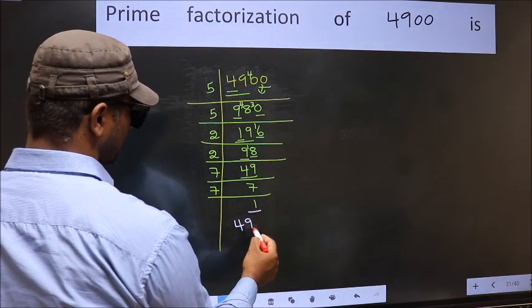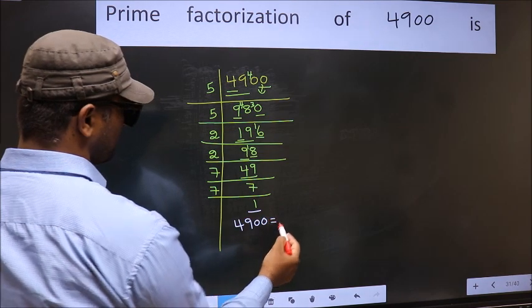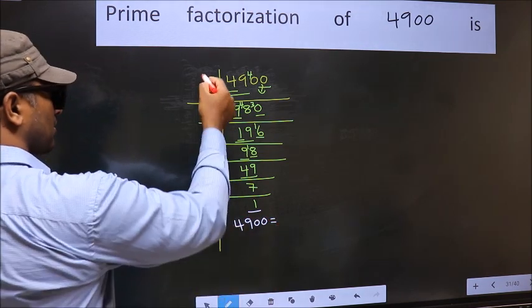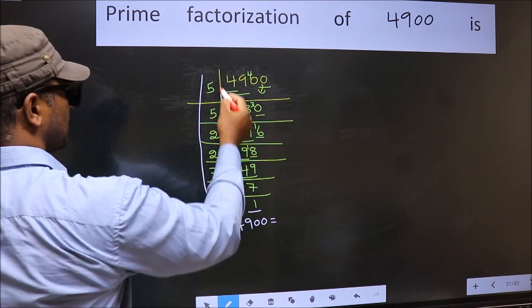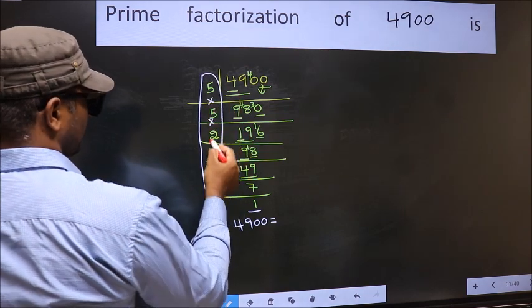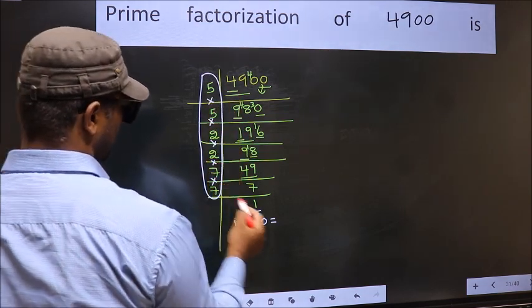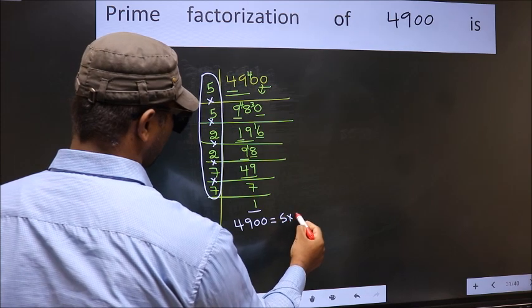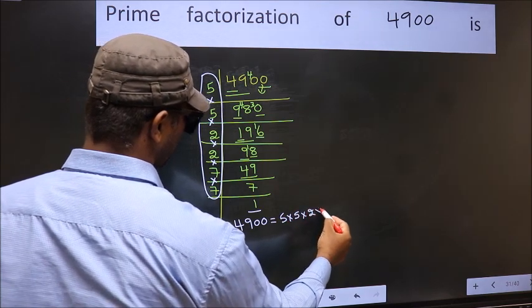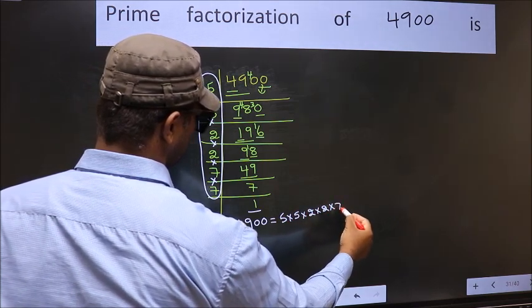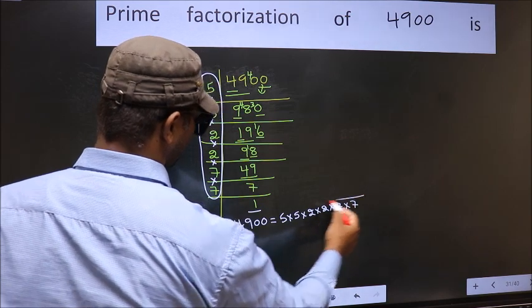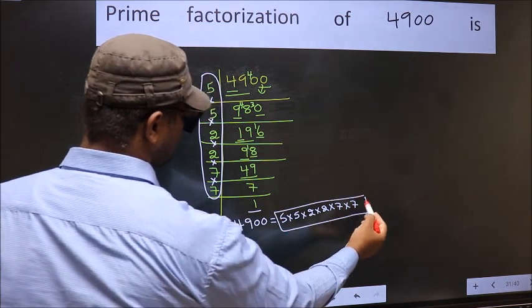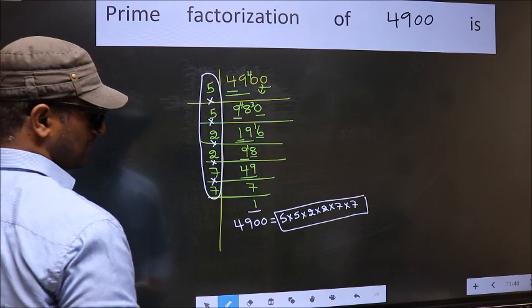So the prime factorization of 4900 is the product of these numbers: 5 times 5 times 2 times 2 times 7 times 7. This is the prime factorization of 4900.